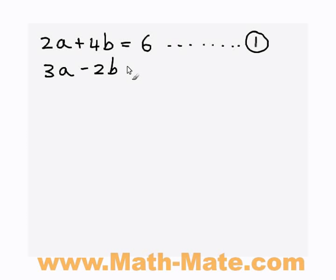The substitution method is one of the two methods you can use to solve simultaneous equations. I'm going to demonstrate it here with a set of two simultaneous equations. First we have 2a plus 4b equals 6. It's always good to label your simultaneous equations with a number so you can refer to them by the number. So that's equation 1. Equation 2 is 3a minus 2b equals negative 7, and I'm going to label that with a 2.